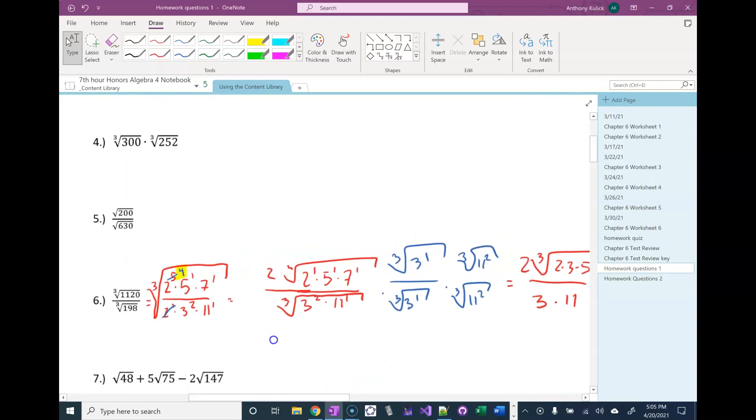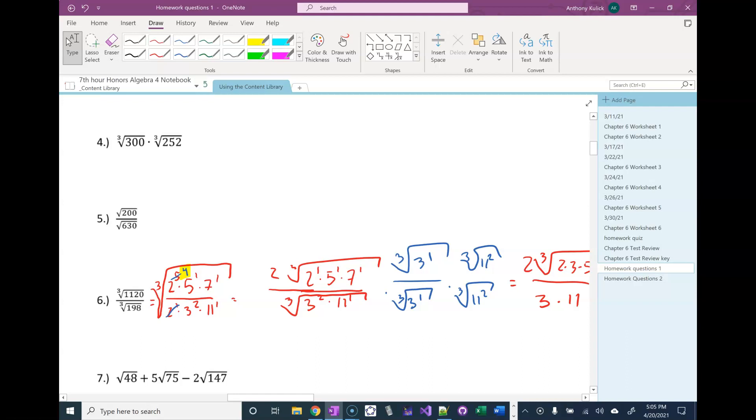So for number five I would start by doing my prime factorization. The prime factorization of 200 is 2 to the third times 5 squared, and the prime factorization of 630 is 2 times 3 squared times 5 times 7. Since those are both square roots, I'm going to put that under one big square root and then look to see if there's any reducing to do.